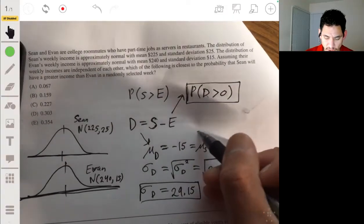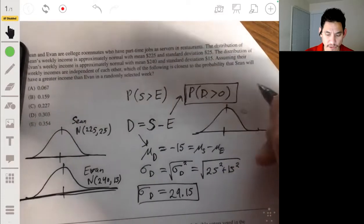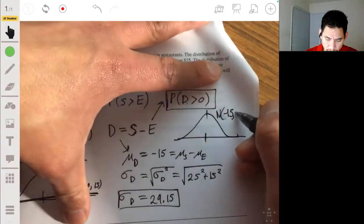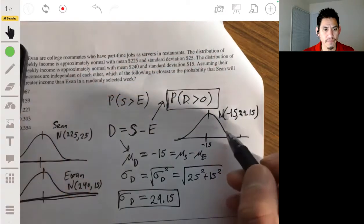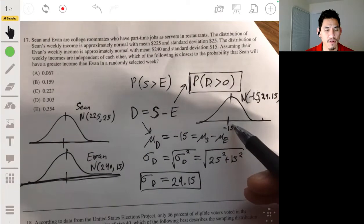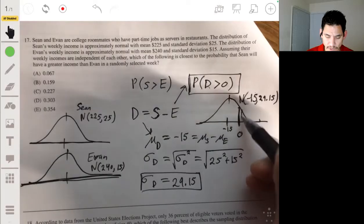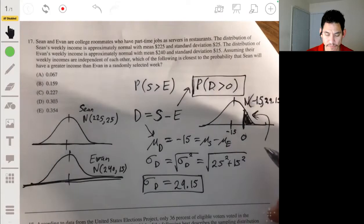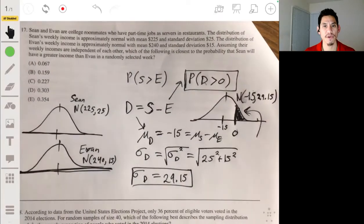Okay, so now we have our third distribution is the one we're going to actually use for calculations. This is approximately normal with the mean of negative 15 and the standard deviation of 29.15. So this is centered at negative 15. And we want to find the probability that D is greater than 0, which is meaning that we're going to, 0 is going to be over here. So we want to find essentially this area here. So we want to find the area to the right of 0 in this distribution.